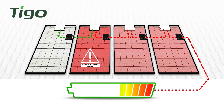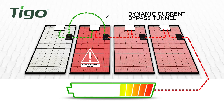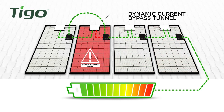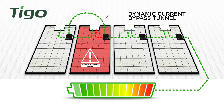The tunnel's diameter is dynamic and opens only as much as needed. The underperforming module will continue to contribute its power to the string and does not restrict the flow from other modules.